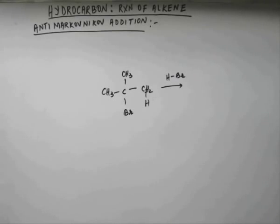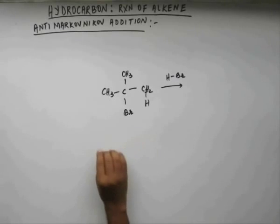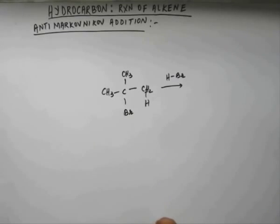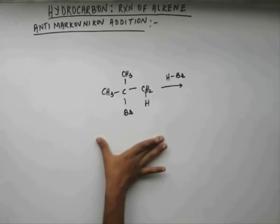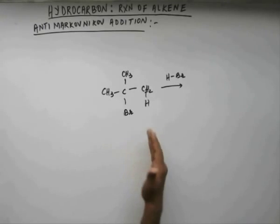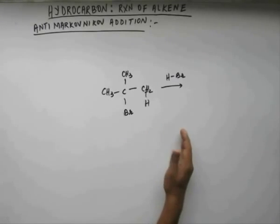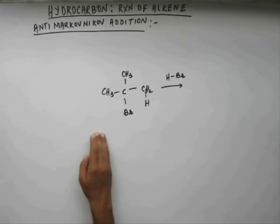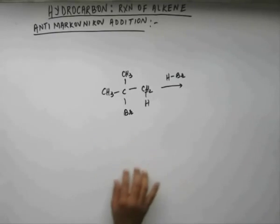This we understand very well. But this rule was given prior to our understanding of carbocations and their stabilizing effects. So this was a mere rule given by reading the products from various reactions. But nevertheless, this is called Markovnikov rule that hydrogen will get attached to an outer carbon and bromine will get attached to the internal carbon, and that's what we did in the last reaction.